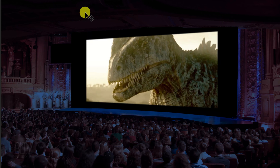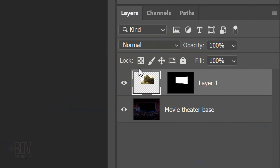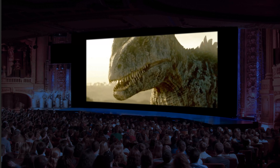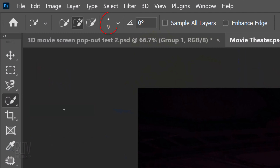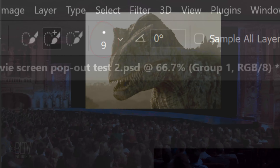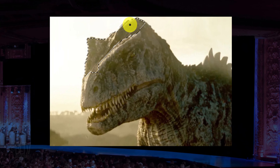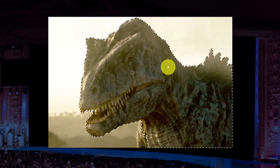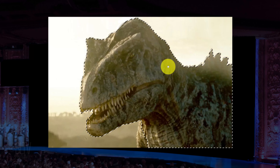Next, we'll make parts of the subject pop out of the movie screen. In this example, I want the top of the dinosaur's head to pop out. Shift-click the layer mask to hide it. Open your Quick Selection Tool and make its size approximately 10 pixels. Carefully drag the tool over the area of your subject you want to pop out. Don't be concerned with the rest of the selection, since the rest of your subject will remain inside the movie screen. If you want to remove areas of the selection, press and hold Alt or Option as you drag over those areas.